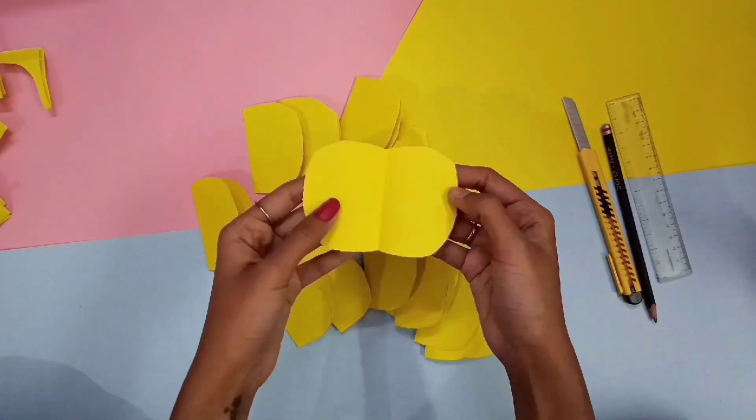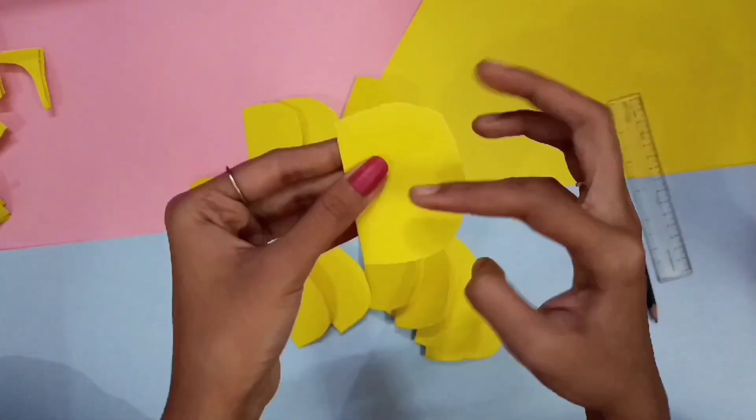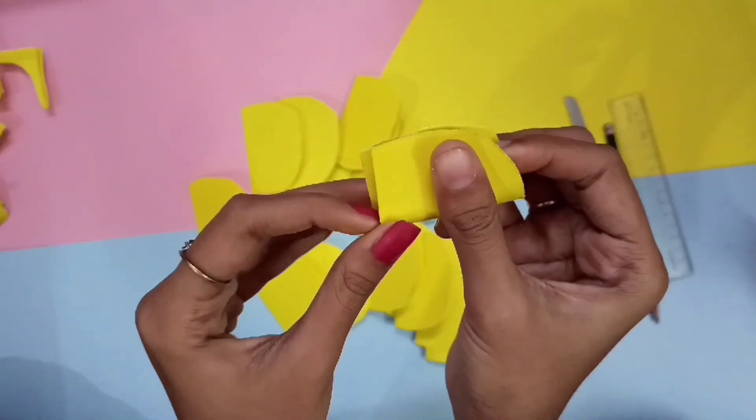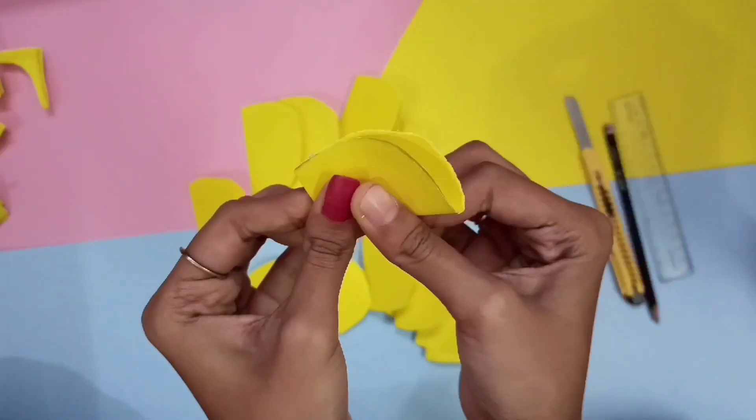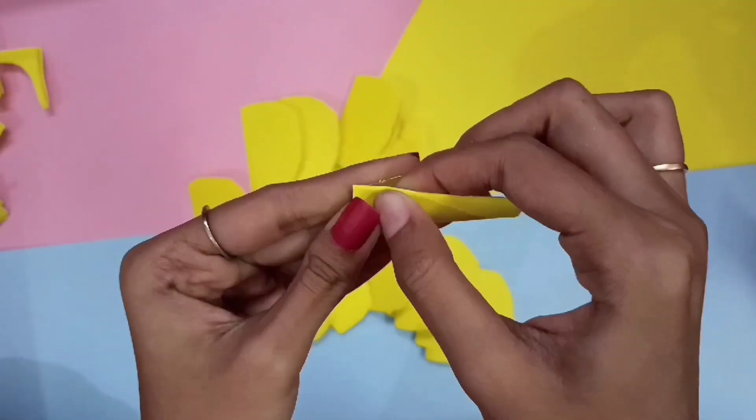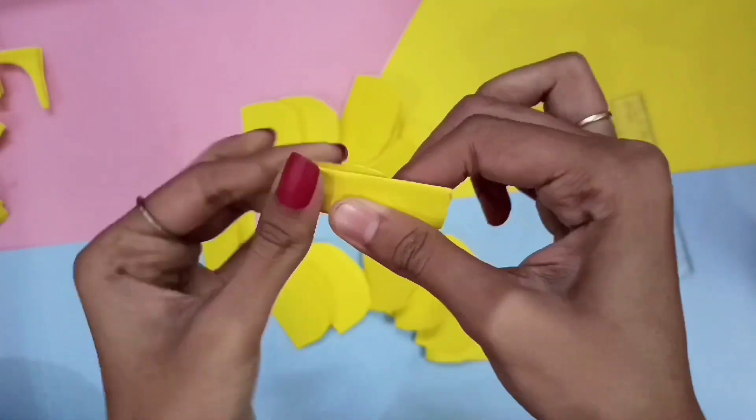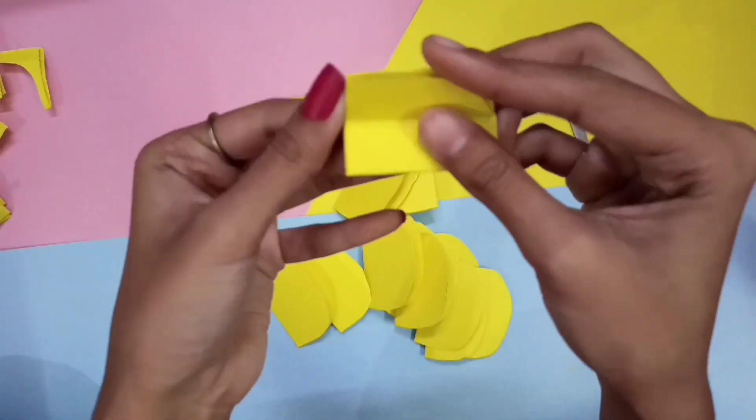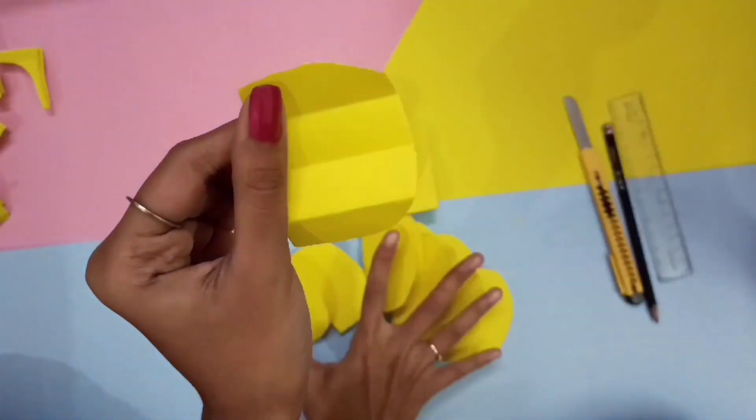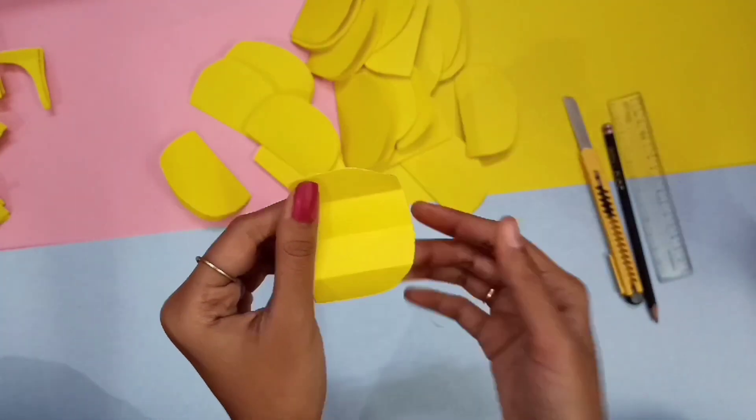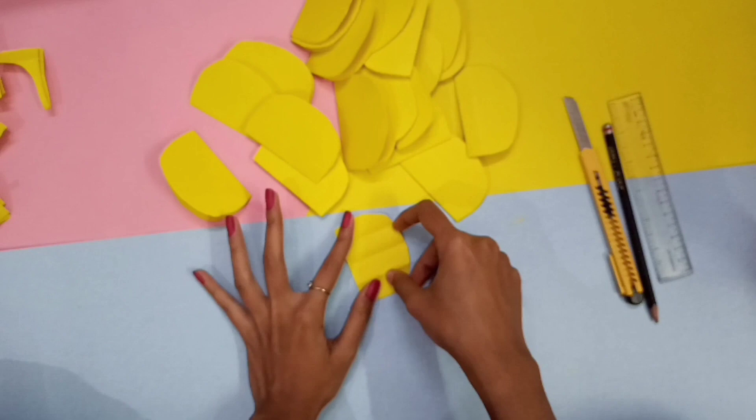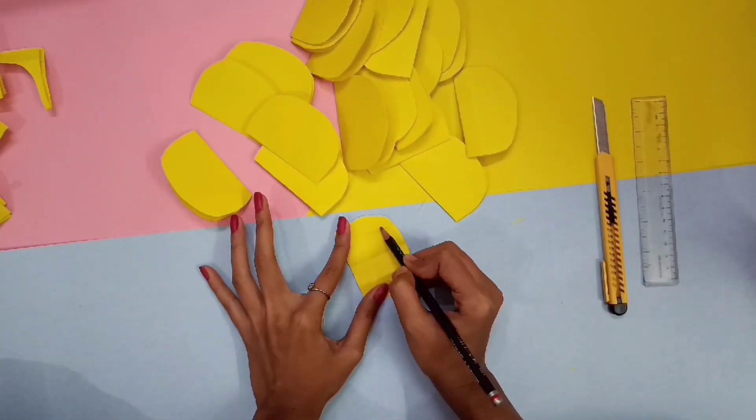Now take the half pineapple shape papers and fold it twice just like so. Now take one and apply glue just where I marked.